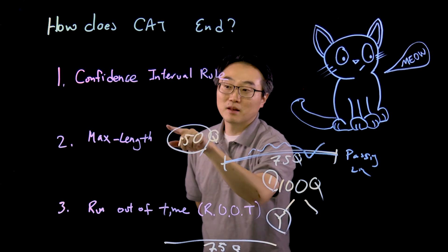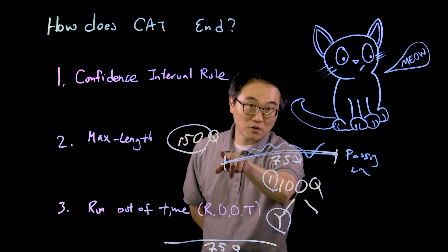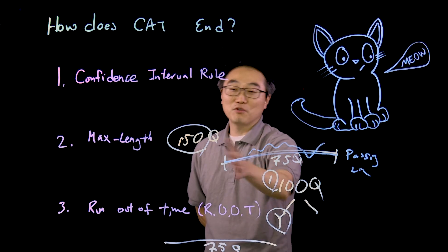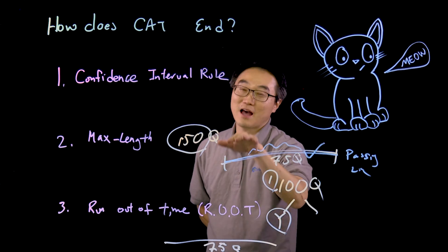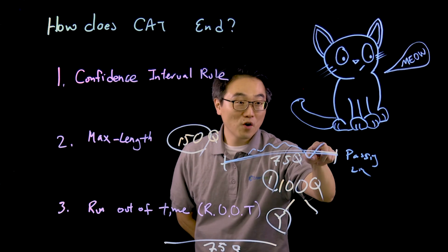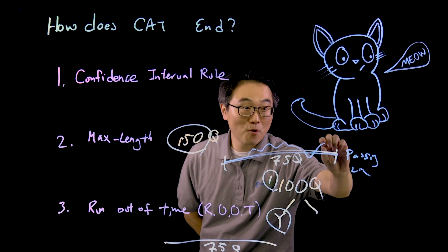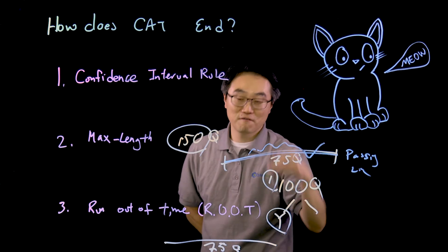The second one is Maximum Length: 150 questions. During the three hours you went through 150 questions. At that point they'll look at where your performance is. If your actual midpoint is above the line, you pass; below the line, fail.